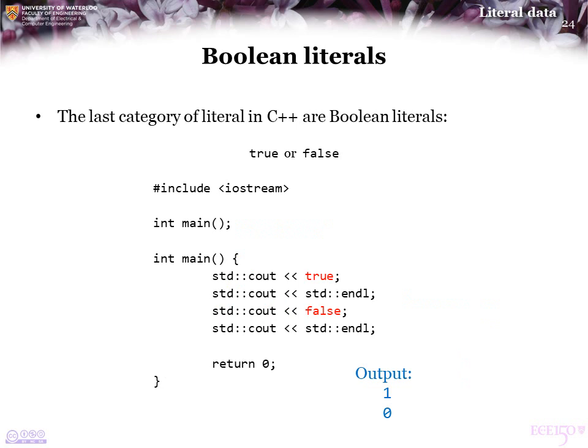The last category of literals in C++ are Boolean literals: true and false. Some condition may be true or false, and we can compare it with these values. As you can see from the output, they're actually represented internally not as a sequence of characters, but rather as 1 and 0 respectively.